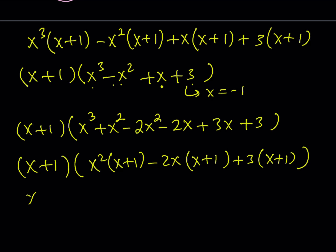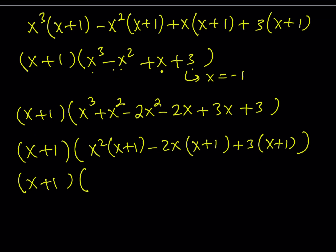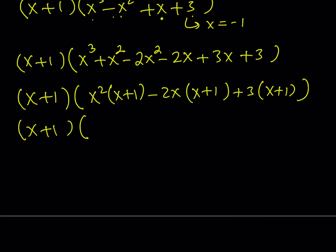Now we can factor. Notice the x plus one in the first factor always stays. We take out another x plus one, and the other factor is x squared minus 2x plus 3. So it's completely factored except for the quadratic, but the quadratic is easy to deal with, so we leave it at that.